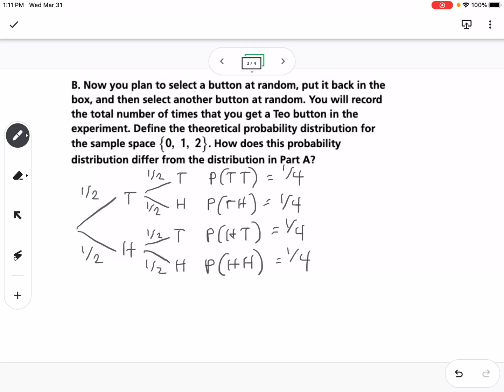If we look at our sample space, the probability of drawing zero Tio buttons would be this probability right here, which is one-fourth. That's Henry both times. The probability of drawing one would be either the Tio Henry or the Henry Tio. So one-fourth plus one-fourth, that would be one-half. And finally, the probability of two Tios would also be one-fourth.